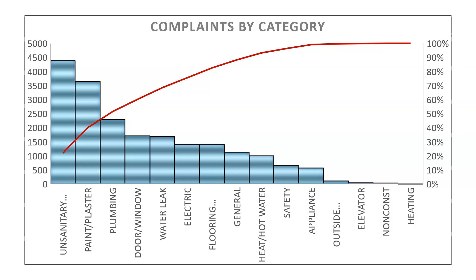So if you're trying to figure out what you should start with when addressing defects, minimizing those complaints, and making your properties more attractive, you'd want to start with those issues on the left-hand side. Focus there first, and then work your way across the Pareto chart.